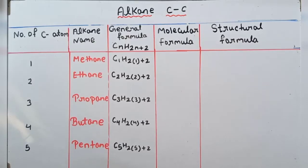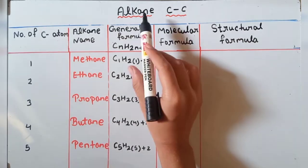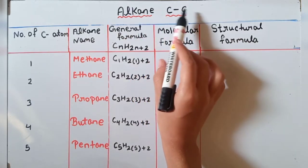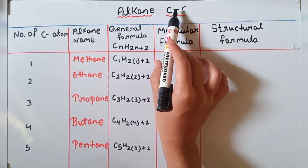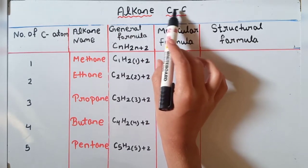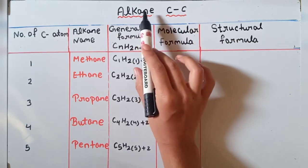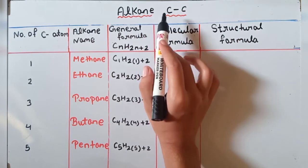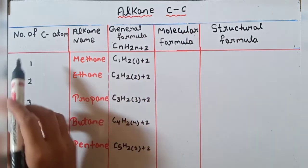Hello everyone, welcome to V-Sense Academy. Today we are going to study the molecular and structural formula for alkane. Alkane kya hota hai — that is carbon to carbon single bond. Jab single bond present rahti hai, tab hum kehte hain that it is an alkane.